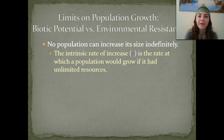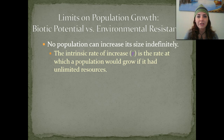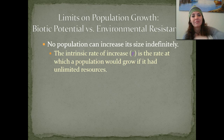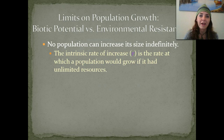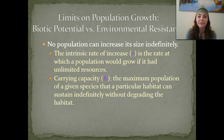The intrinsic rate of increase, or R, is the rate at which a population would grow if it had unlimited resources — meaning we'd have a graph that just keeps going and going. That's the intrinsic rate of increase, represented by R. The carrying capacity, or K, is the maximum population of a given species that a particular habitat can sustain indefinitely without degrading the habitat.